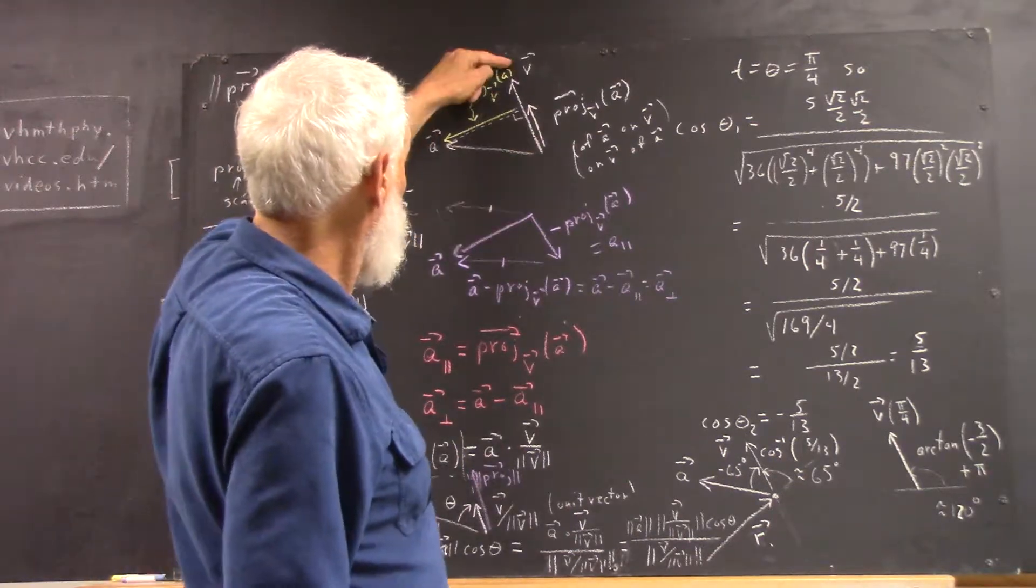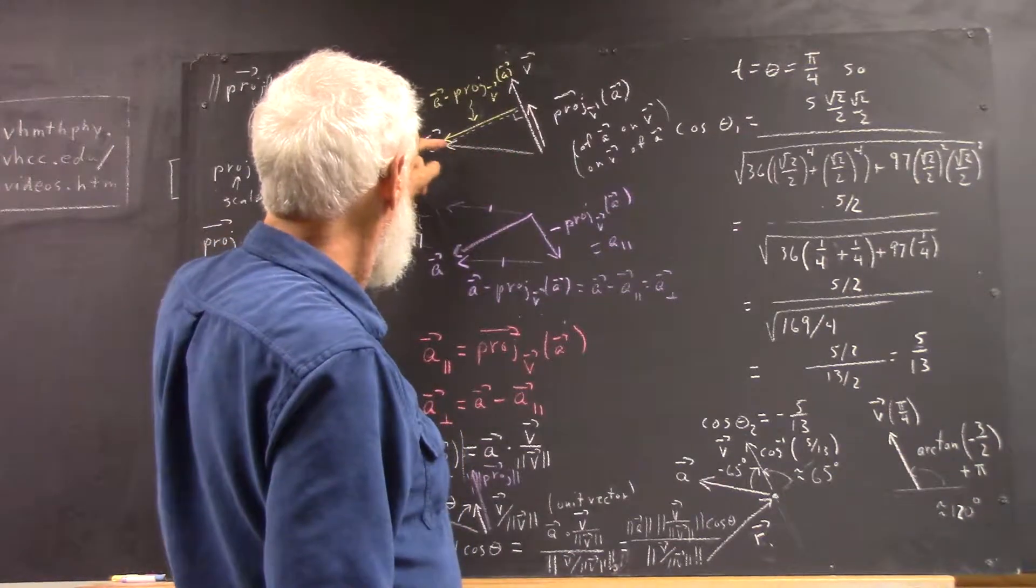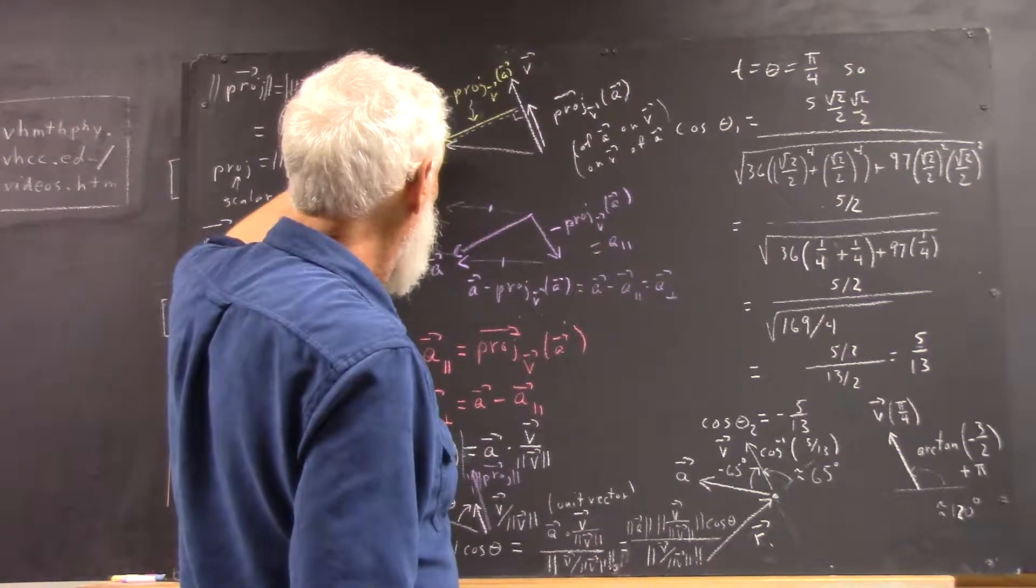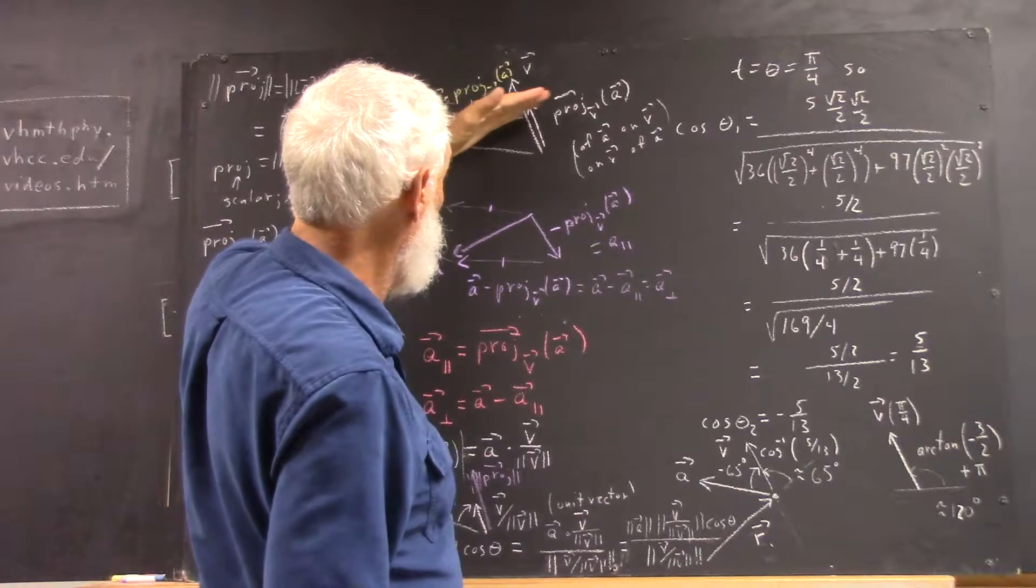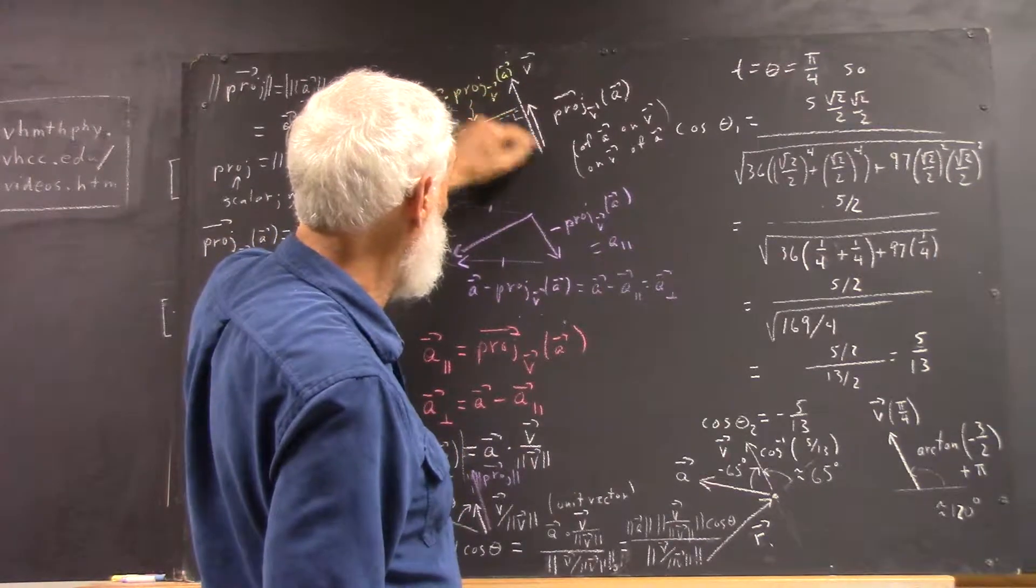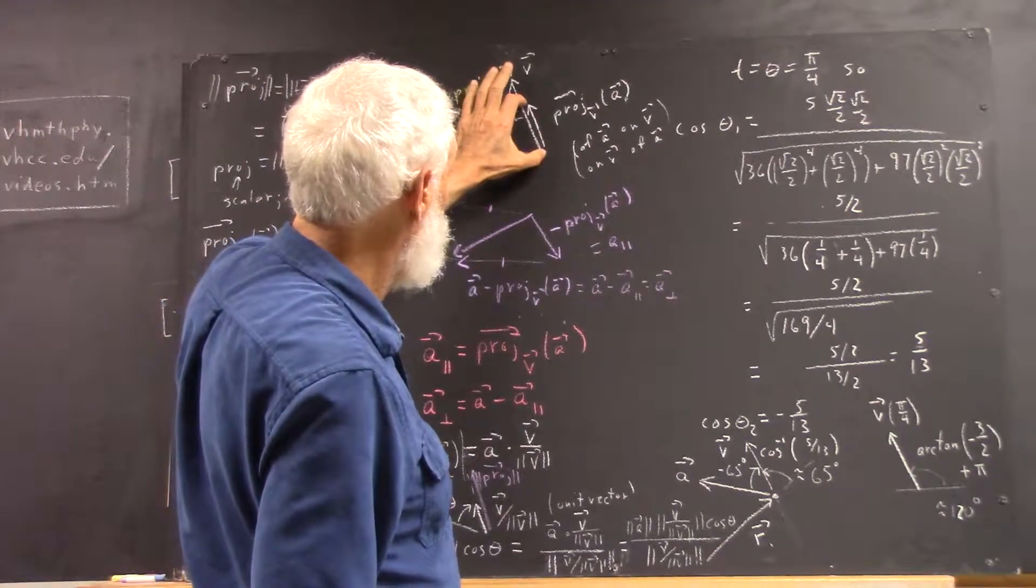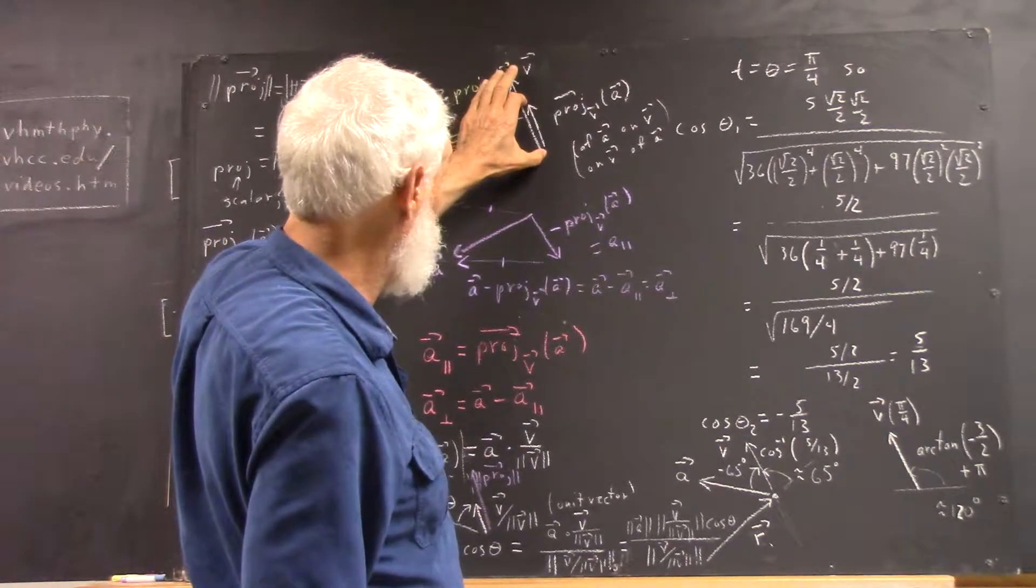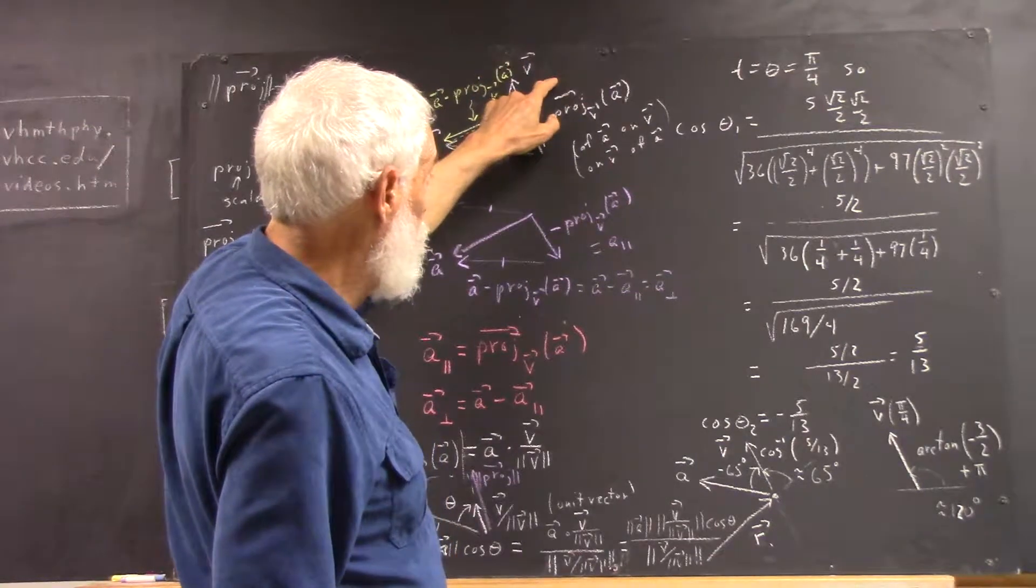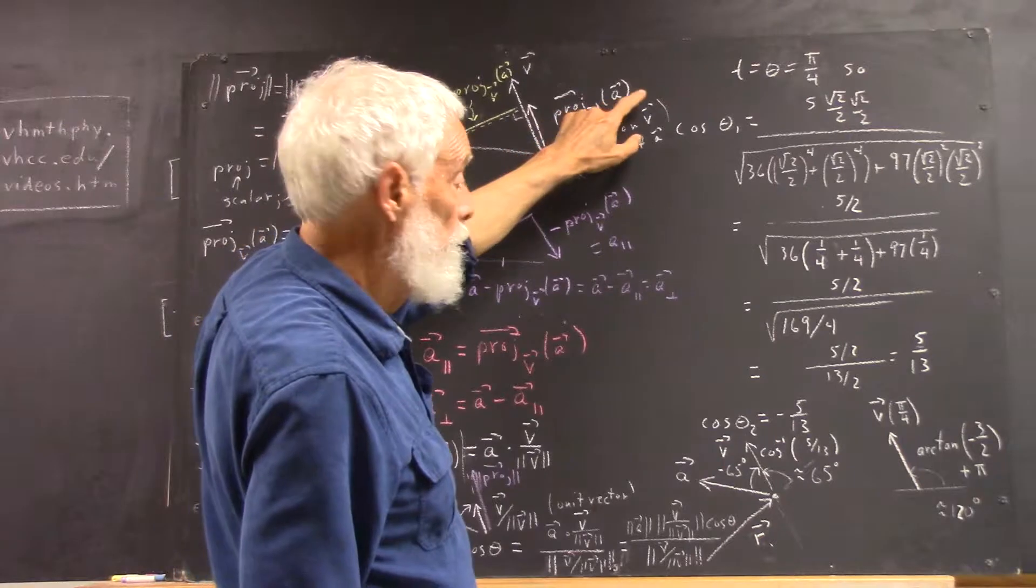Now, you take the A vector, and you come back at a perpendicular to the V vector. You have this dotted white projection line making the right angle with the V vector. And from here to here is your vector projection, which we write, projection with an arrow over the top of it, subscript V, A in parentheses.